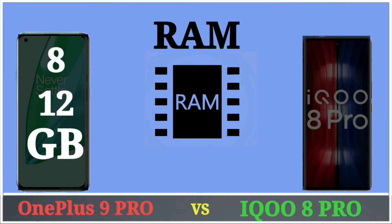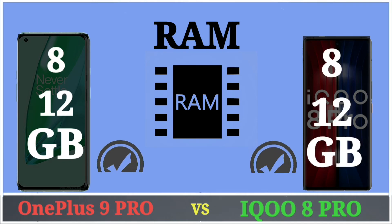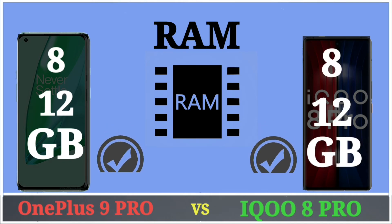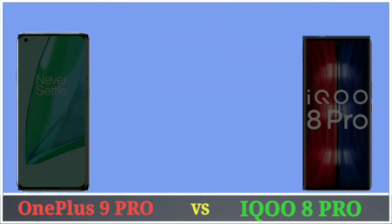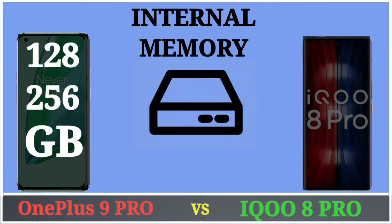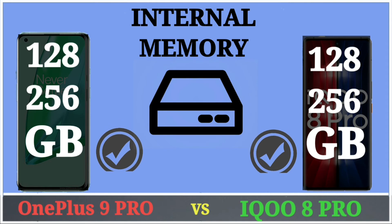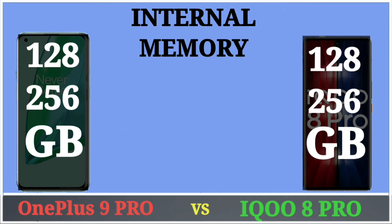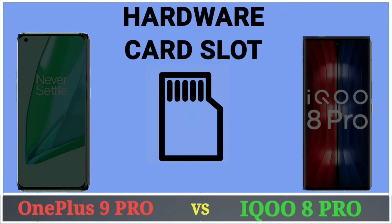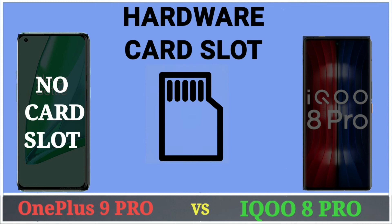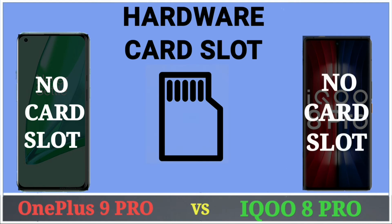OnePlus 9 Pro has 8GB and 12GB RAM variants, and iQOO 8 Pro also has 8GB and 12GB RAM variants. For internal storage, OnePlus 9 Pro has 128GB and 256GB options, and iQOO 8 Pro has the same. Neither phone supports an expandable card slot.